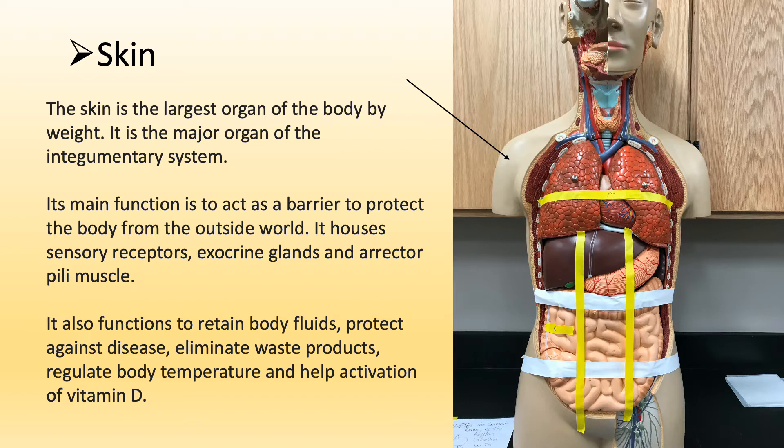Its main function is to act as a barrier to protect the body from the outside world. It houses sensory receptors, exocrine glands, and erector pili muscle, which causes goosebumps. It also functions to retain body fluids, excrete waste, regulate body temperature, and help activation of vitamin D.